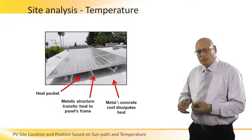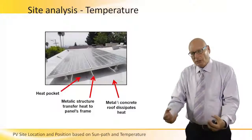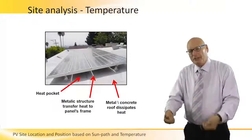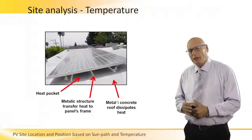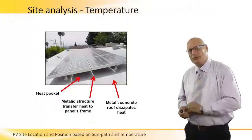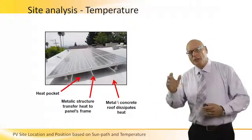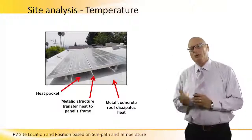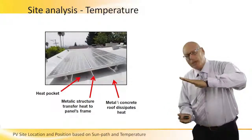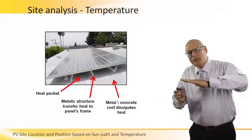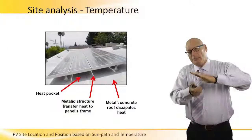Another thing is the metallic structure. We can see in the center the metallic profiles and this structure, which is mechanically connected to the roof. Because it's metallic — and usually it's aluminum — aluminum by its nature is a very good heat conductor. So not only do we create a heat pocket, but the heat will be transferred through the structure to the panels. The metallic roof will transfer its heat to the metallic structure, which will heat up the backside of the panels.